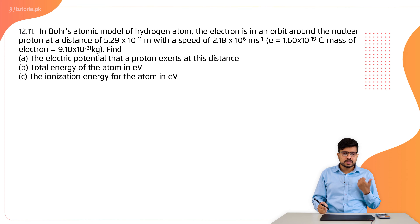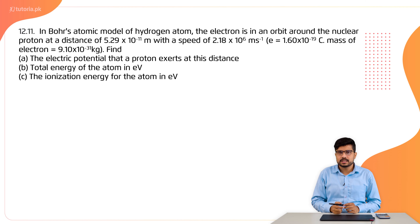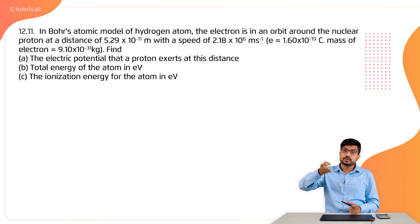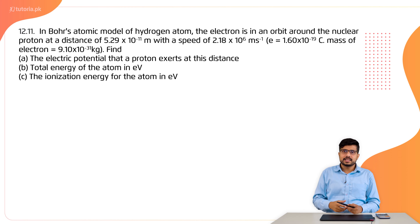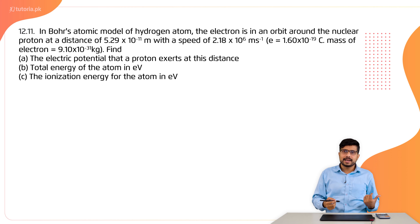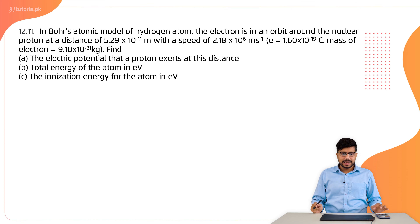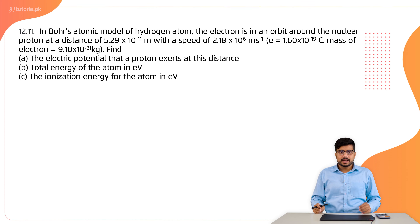The third thing to find is the ionization energy, which is the amount of energy required to remove the electron from the orbit to infinity. This is a big numerical which we will solve step-wise.